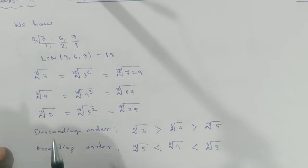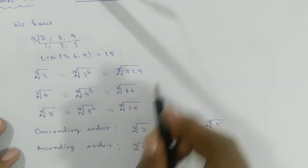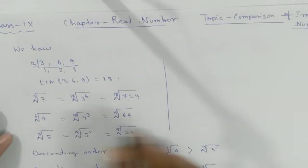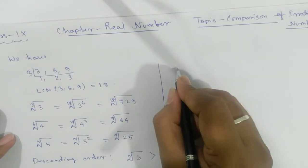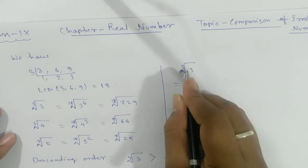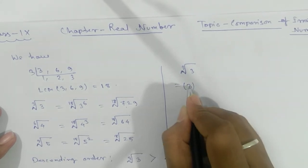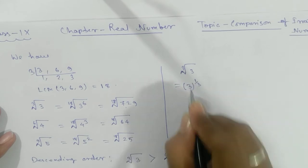Now you may ask one question: how did you get this power? How can you say like that? Let's see. How did I get this one? Here we have cube root of 3. This one can be written as 3 to the power 1 by 3.